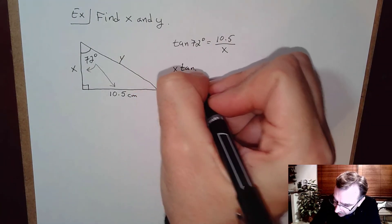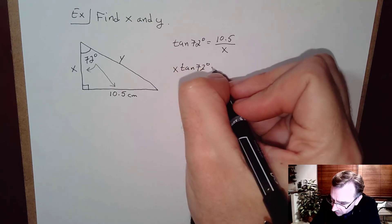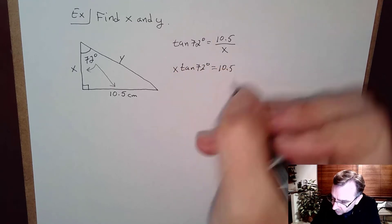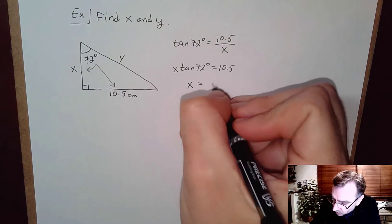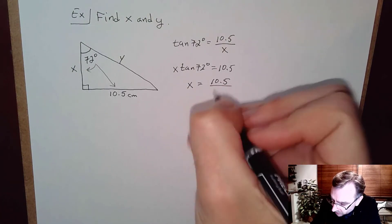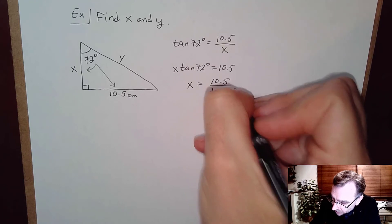I'm going to try to isolate x. So x times tangent of 72 degrees equals 10.5. Dividing both sides by tangent of 72, we get x equals 10.5 divided by tangent of 72 degrees.